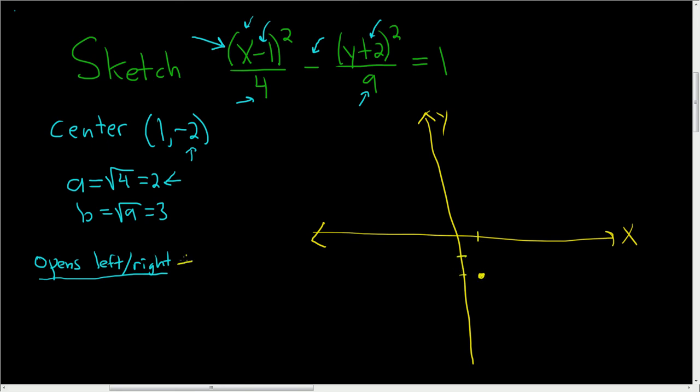And it opens left and right, so we will go left and right by A. So 1, 2, and then we'll put a dot. Then you go left by 2. So 1, 2, and then you put a dot. And then you just go up and down by 3. So 1, 2, 3. Put a dot. 1, 2, 3. Put a dot.